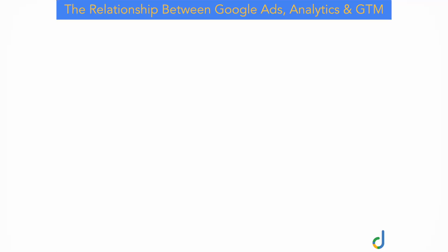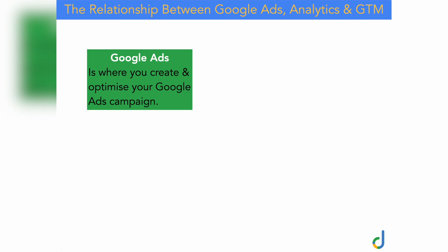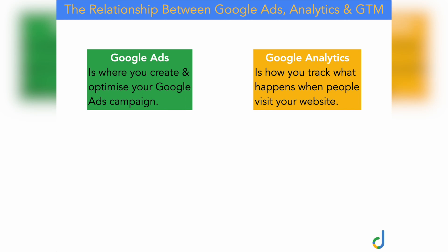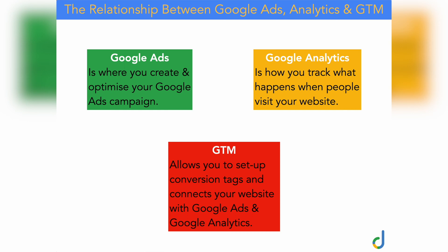So that you can understand the steps we're going to take to set up your conversion tracking in Google Ads using Google Analytics and Google Tag Manager, I wanted to quickly take you through the relationship between these three tools. In Google Ads you create and optimize your campaigns. Google Analytics is how you track what happens when people visit your website — including what happens when they arrive from your Google Ads campaigns. And Google Tag Manager allows you to set up conversion tags and connects those tags and triggers with your website, your Google Ads profile, and your Google Analytics account. You need all three working together to get proper conversion data.